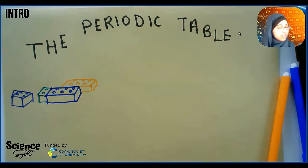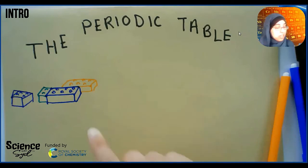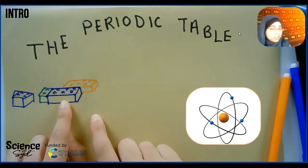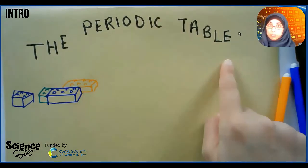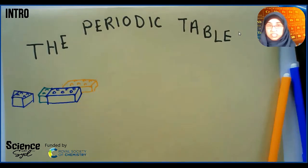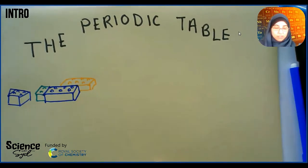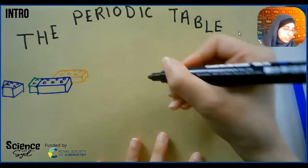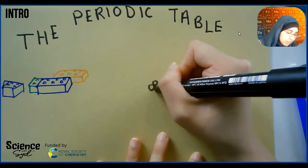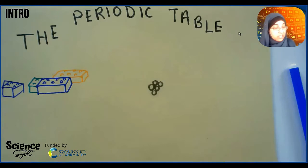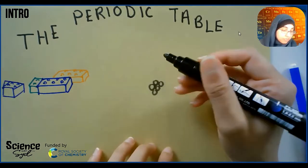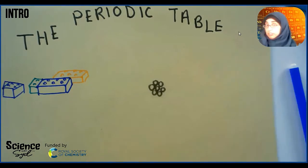Have a think about this: if you take a Lego piece, you can make lots of different things with it, but essentially the Lego piece is exactly the same. And atoms are a bit like that. So we're going to use the concept of Lego to help us understand atoms. Atoms are the foundation of the periodic table, so we need to understand what atoms are for starters. An atom has lots of little bits in the middle, and atoms are building blocks of everything around us — just like Lego is a building block which allows us to make lots of different things.